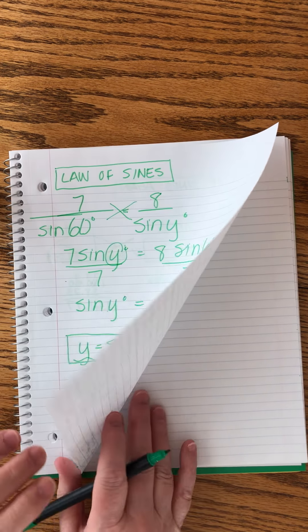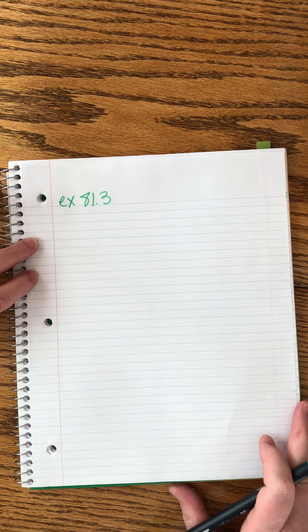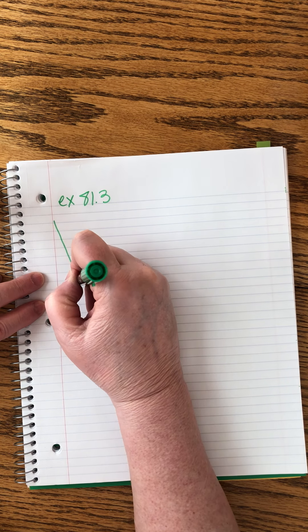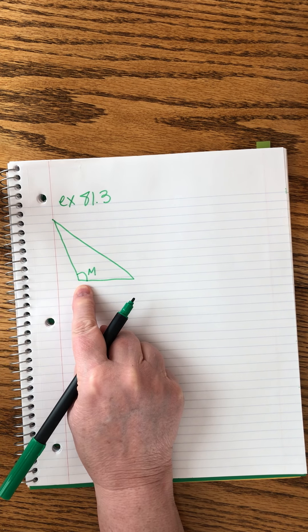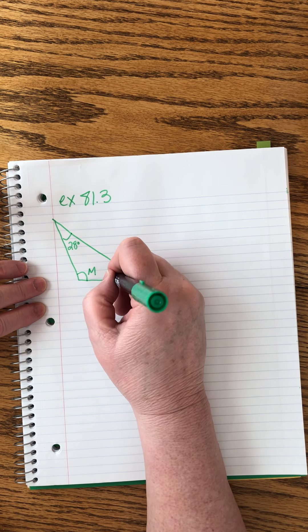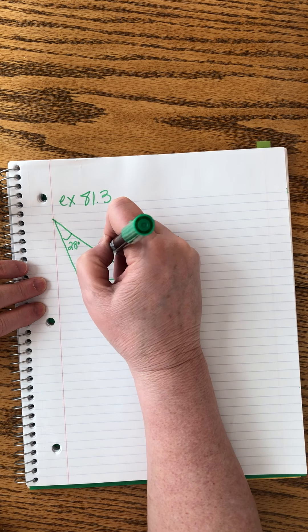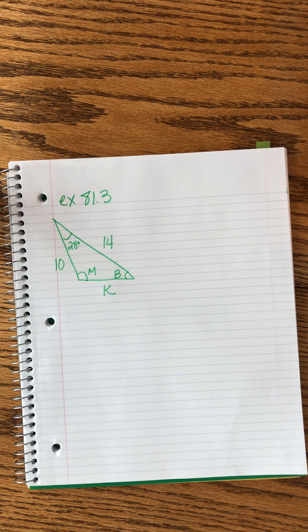Example 81.3 — solve the triangle for the unknown parts. This is an obtuse triangle; angle M is definitely greater than 90 degrees. We have angle 28 degrees, and sides of length b, 14, 10, and k. It's not a right triangle, and we have one angle and two sides but none of them make a matching pair, so we have to use the law of cosines.